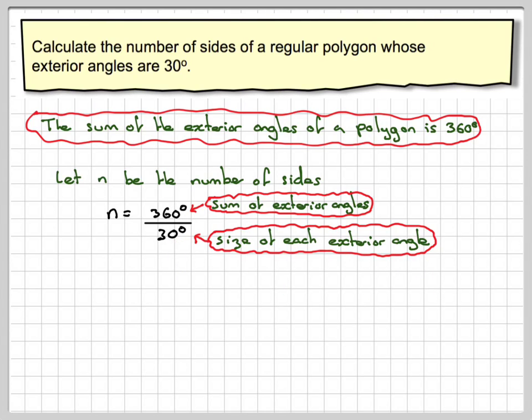How many times do 30 go into 360? The answer will be 12 sides.